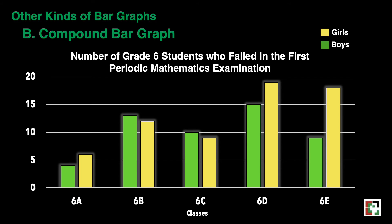Second, more boys failed in the mathematics examination than girls in grade 6B and 6C classes. Third, there are about 48 boys in all in the given five classes. And lastly, there are more girls who failed in the mathematics examination than boys.